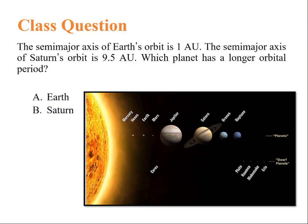Another class question: The semi-major axis of earth's orbit is 1 AU. The semi-major axis of Saturn's orbit is 9.5 AU. Which planet has a longer orbital period? The answer is definitely Saturn, according to Kepler's third law.